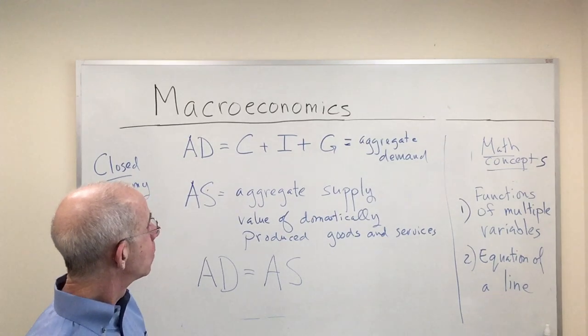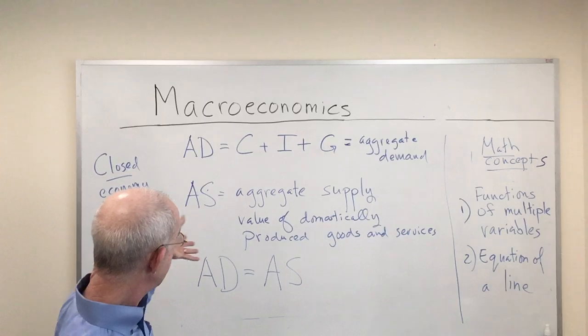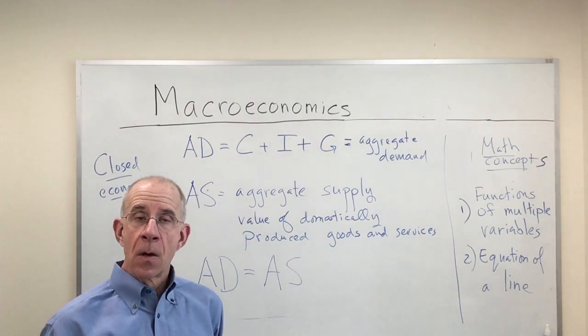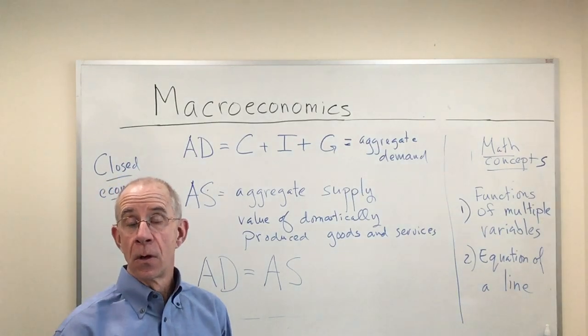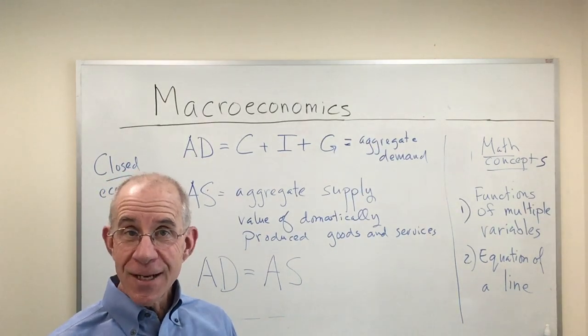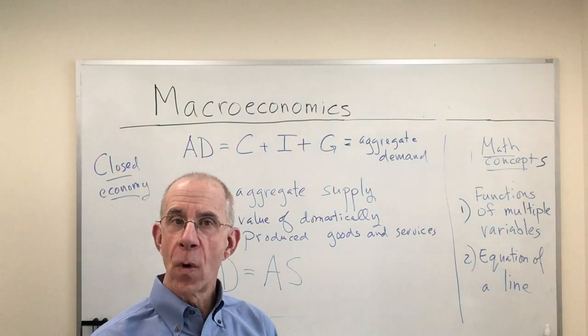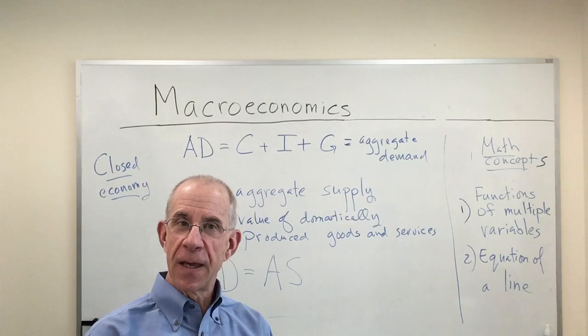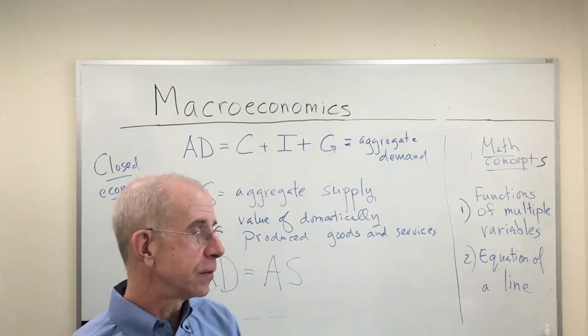Now, we can talk about aggregate demand equal to aggregate supply and still have, for example, a recessionary situation where there are goods that the economy is producing that are not wanted. Now, how do we do that?